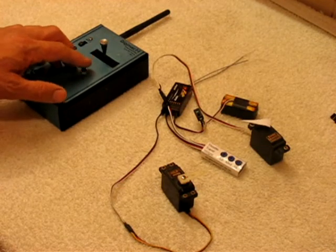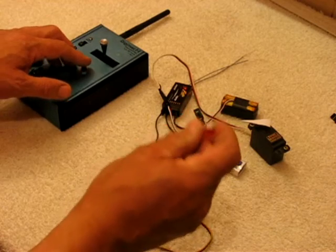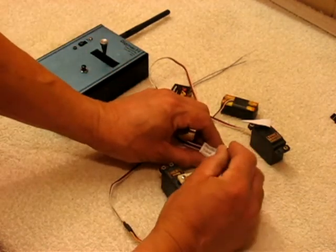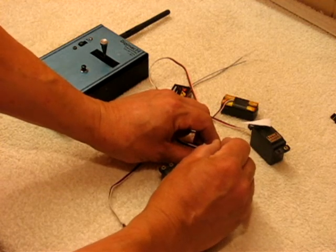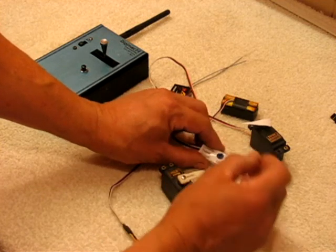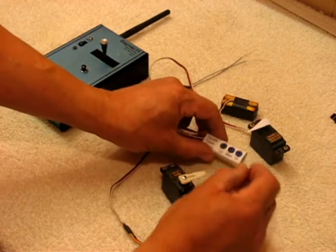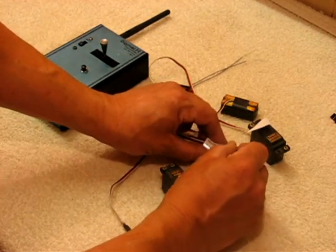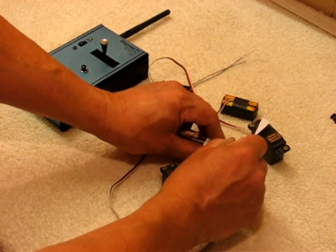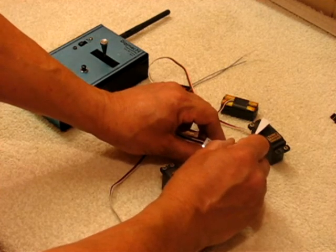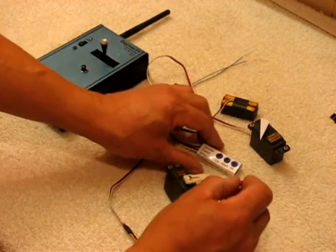But what we can do is we can adjust the low position so that the carburetor is just closed to the right point. We can adjust the mid position so it's just running at the right speed, which might be towards one end. And then we can set the fast position.